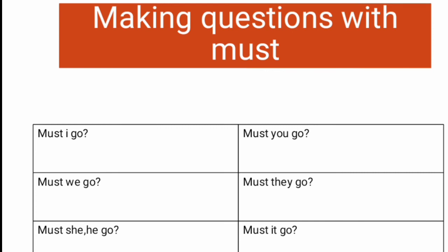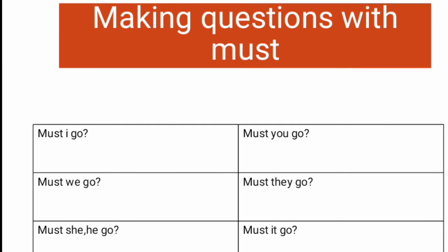Question examples: Must I go? Must we go? Must he go? Must you go? Must they go? Must it go? All pronouns can be used with 'must' and 'mustn't' — I must, we must, he/she/it must, you must, they must. Likewise: I mustn't, we mustn't, he/she/it mustn't, you mustn't, they mustn't.